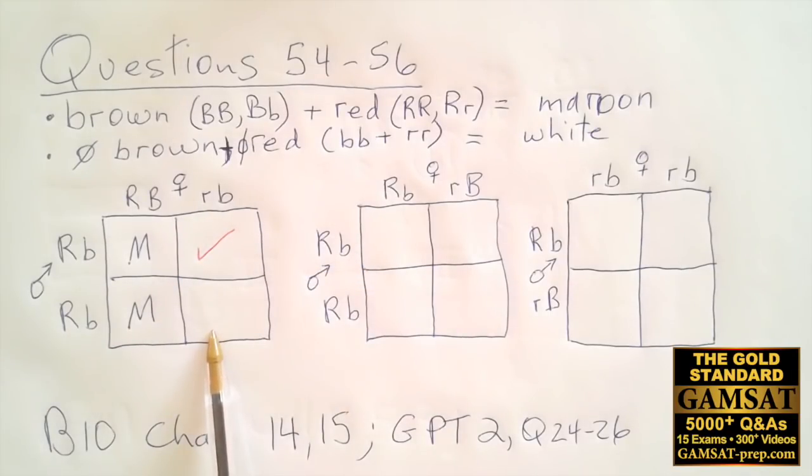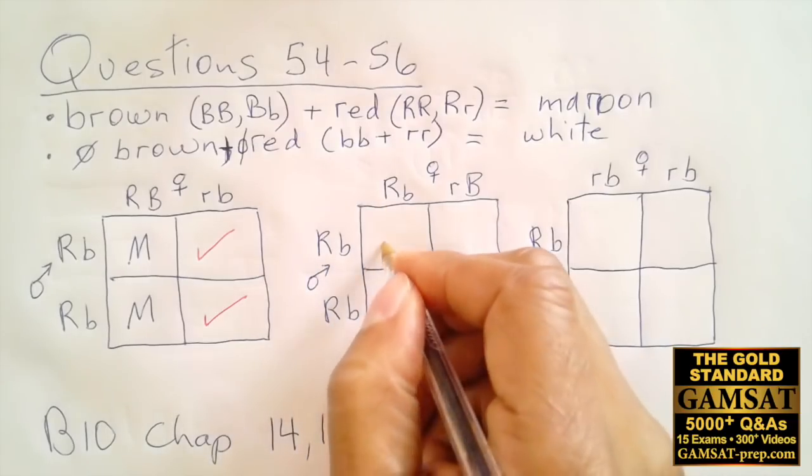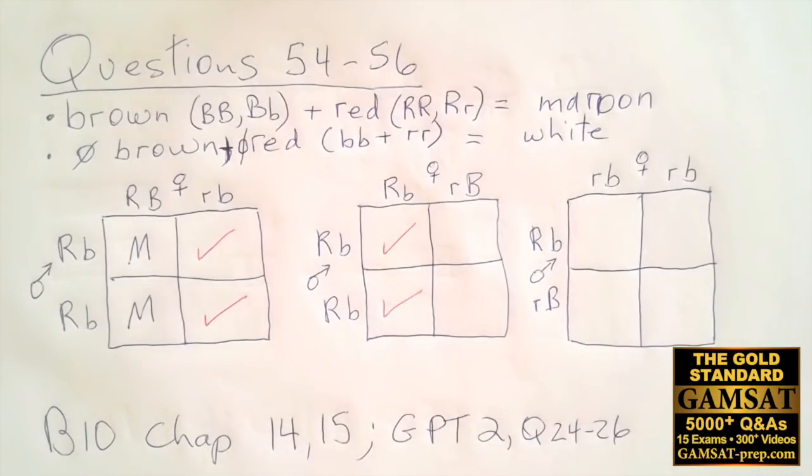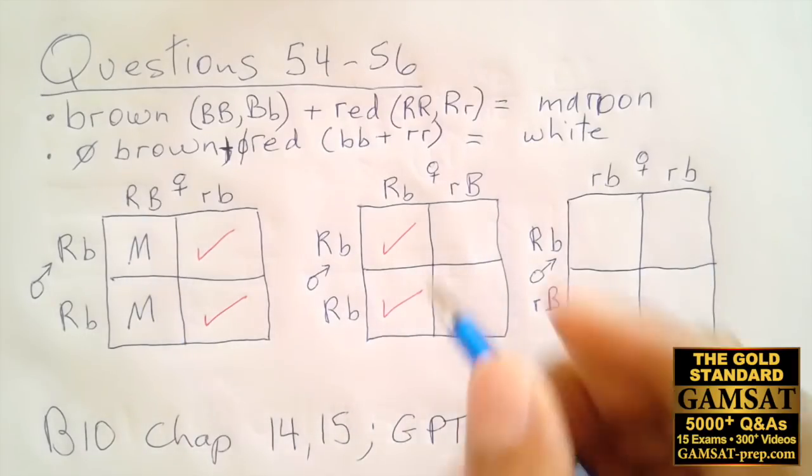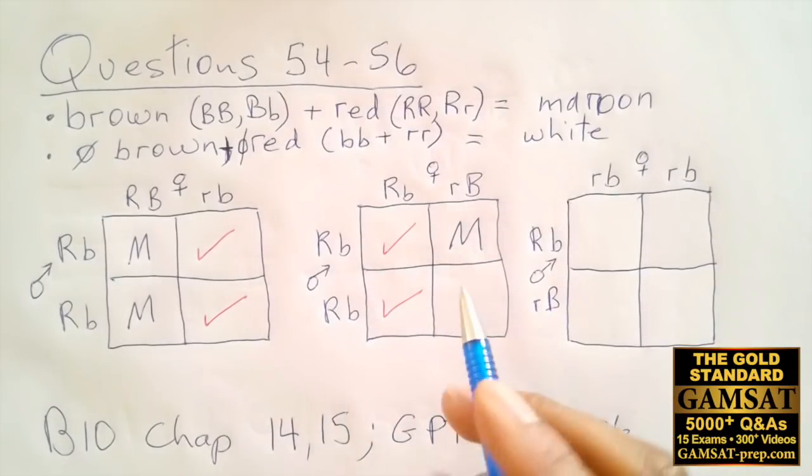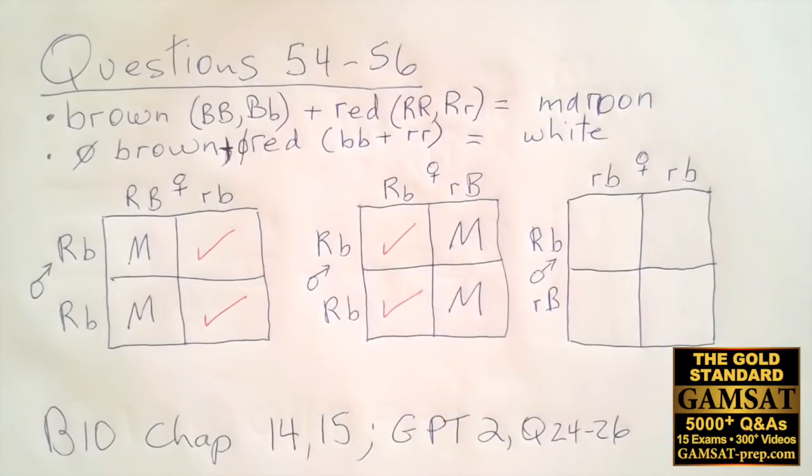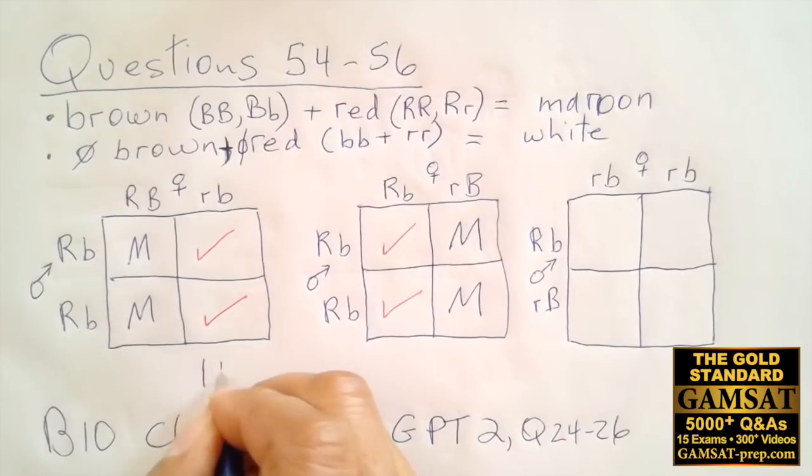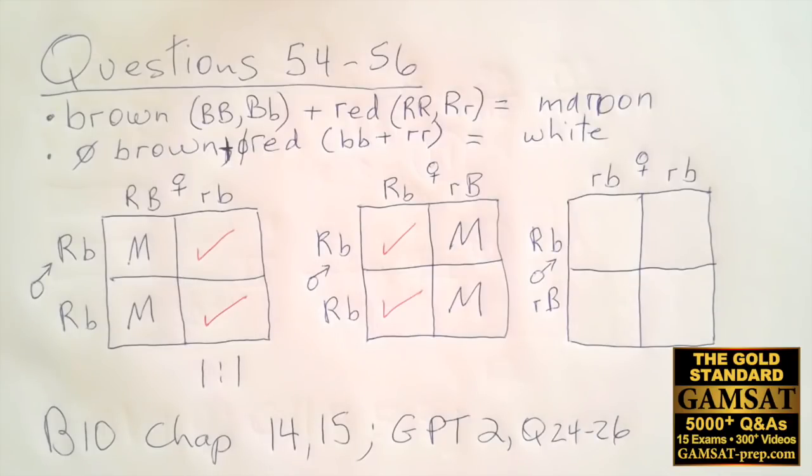And then here again, big R is going to be expressed as red and only a little b, so that's going to be red as well. Now going over to the other side, we have big R's and little b's, that's red. Big R's little b's, red. And then we have big R's and big B being expressed, so that's going to be red and brown, maroon. And then we have big R's and little b's again, red and brown, maroon. So we see that in both cases it's going to be one to one, and it's going to be maroon to red. So for question 54, the correct answer is D, maroon and red-eyed in equal proportions. So the recombination had no effect.